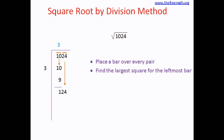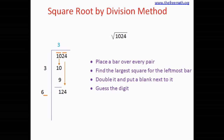Now you bring down the next pair which is 24. The next step is to look at the previous divisor, which was 3. You double that and then put a blank next to it. So in this case we double 3 to get 6, and now you have a blank next to it. This is a very important step — the step is to guess the digit that goes in that blank.